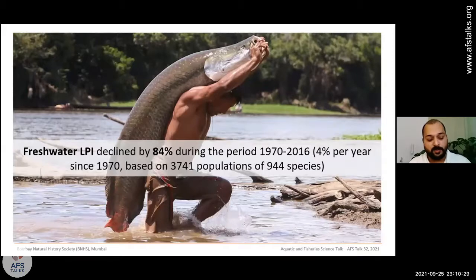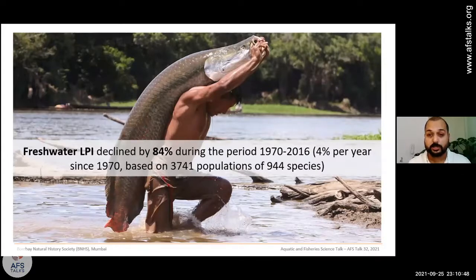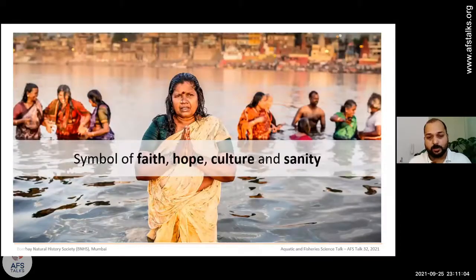Despite this richness, freshwater resources and biodiversity globally are declining rapidly. The recent Living Planet Index report by WWF suggests freshwater biodiversity has declined by almost 84 percent — twice the rate of decline of marine and terrestrial ecosystems. Freshwater ecosystems are really in a bad situation, especially in India and most likely in other countries as well.